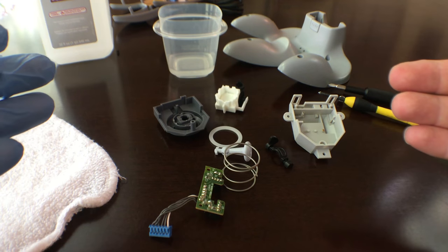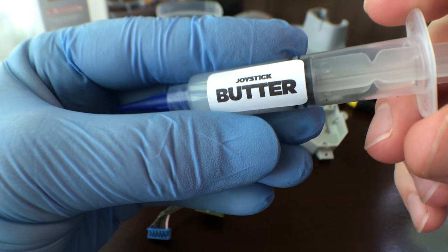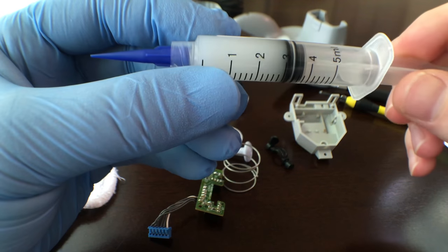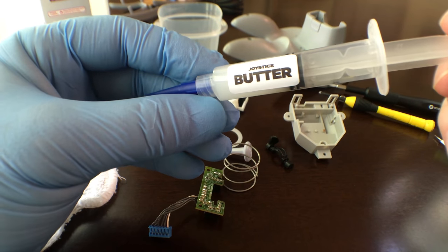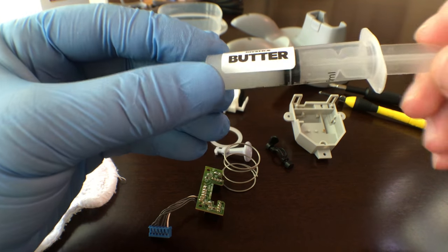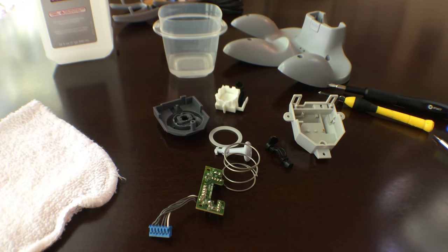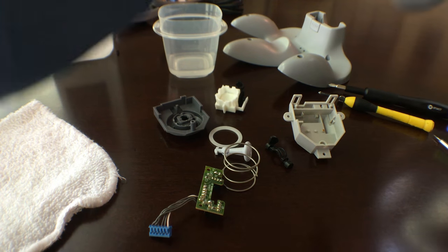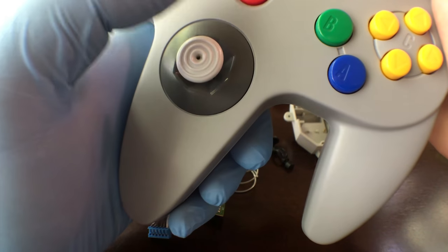Okay, now that we have all of our pieces properly cleaned, the next step is to properly lubricate everything. And for that, I'm going to be using this stuff called joystick butter. It is nothing short of amazing, to say the least.